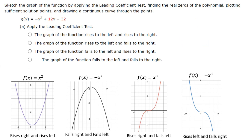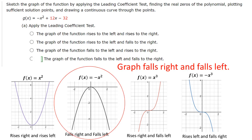To review the leading coefficient test: for a quadratic with a positive leading coefficient, the parabola points up — rises left and right. With a negative leading coefficient, it falls left and right. For a cubic with positive leading coefficient, it falls on the left and rises on the right. For a cubic with negative leading coefficient, it rises on the left and falls on the right. Our parabola has a negative leading coefficient, so it falls on both sides.